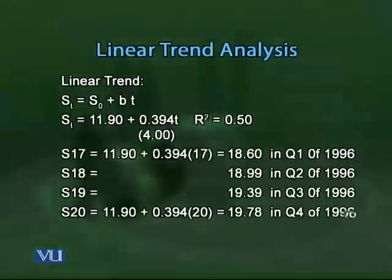The linear trend assumes the past data pattern will continue into the future. We drew a regression line using the least squares method and extended it to 1996. Substituting T values of 17, 18, 19, and 20 for the four quarters of 1996 into the regression equation, we obtained the forecasted values for 1996.